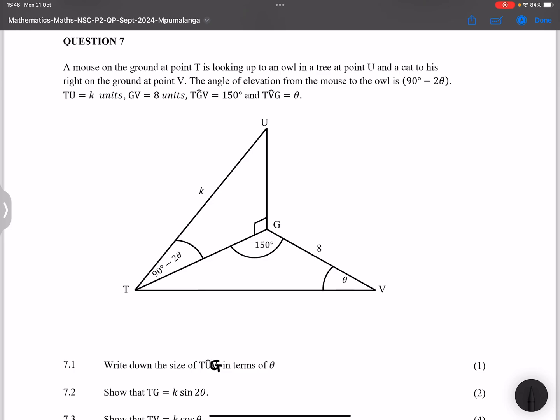So they say write down the size of TUG in terms of θ. Now if you look at it, TUG is in this triangle over here. Right, so it is this angle over there. Now you've got a 90 degree angle over there and you've got 90 minus 2θ, and so that means this angle here can only be 2θ if you take the sum of angles in a triangle. Right, so that angle will actually equal to 2θ and they said write it down which means you didn't necessarily need to calculate it.